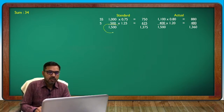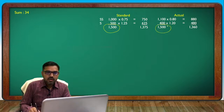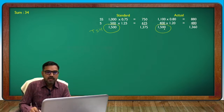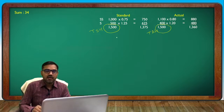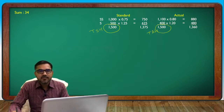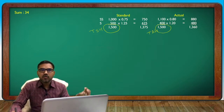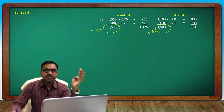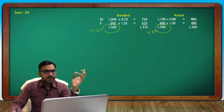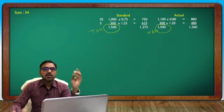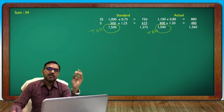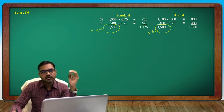Total standard hours and total actual hours are equal. We need: cost, rate, efficiency, and mix variance — total hours for each quarter.